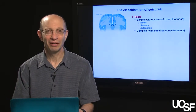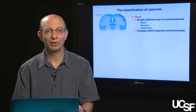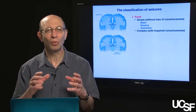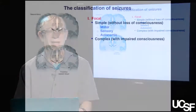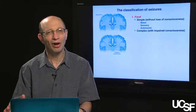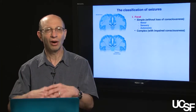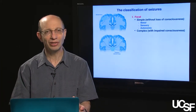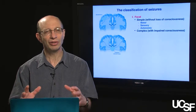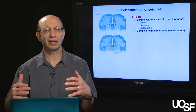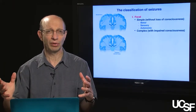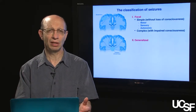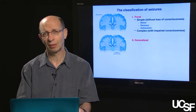The second major category is generalized seizures. Rather than arising from a single focus, the seizure occurs over both hemispheres — essentially the entire brain — all at once. We now realize that in patients with generalized seizures, the overall brain is in a hyperexcitable state: one part initially gets engaged, but it rapidly spreads to both sides. These are referred to as generalized seizures, and there are a number of subtypes.